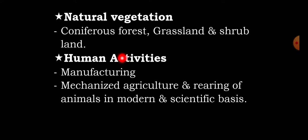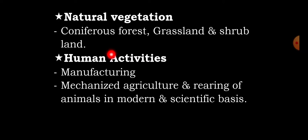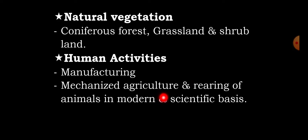Natural vegetation includes coniferous forest, grassland, shrubland, algae, mosses, olive trees, citrus fruits, and Macchia forests. Human activities include manufacturing and mechanized agriculture. This agriculture includes rearing of animals and crop production using modern and effective methods.